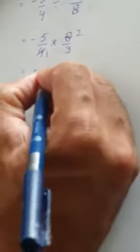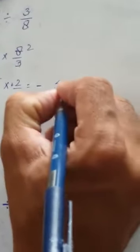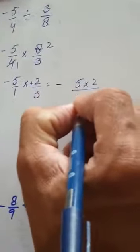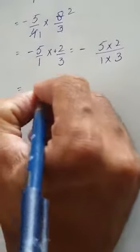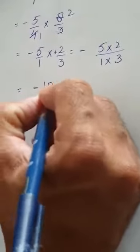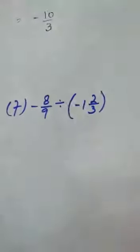We are left with minus 5 over 1 multiplied by 2 over 3. When this minus is multiplied by plus, minus will be our answer. So 5 multiplied by 2 over 1 multiplied by 3 equals minus 10 over 3.